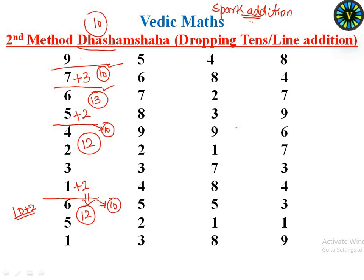So this is 10. If we assume we have 10 to reach, then again 10 to reach — that is 9. So we count: 1, 2, 3, and 4. We have 10 to reach, then again 10 to reach. So the answer is 49.